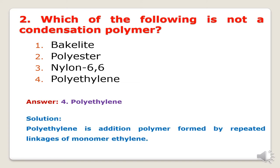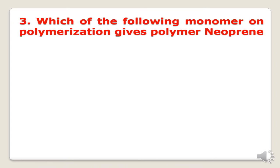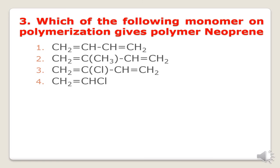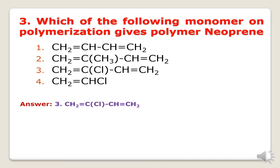Next question: which monomer on polymerization gives the polymer neoprene? Neoprene is a synthetic rubber. The options are butadiyne, 2-methyl-1,3-butadiyne, 2-chloro-1,3-butadiyne, and polyethylene. Neoprene is the commercial name for polychloroprene, so the correct answer is the third option — chloroprene. When chloroprene polymerizes, it forms polychloroprene.